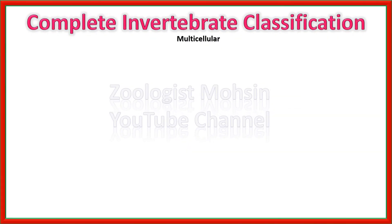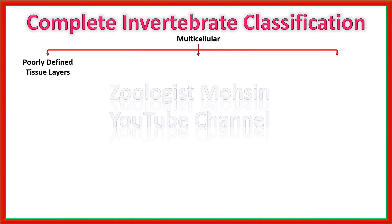All multicellular animals are divided into three basic categories: those having poorly defined tissue layers, those having two body layers, and those having three body layers. Diploblastic are those which have only ectoderm and endoderm — mesoderm is missing — while triploblastic are those which have all three body layers: ectoderm, mesoderm, and endoderm.